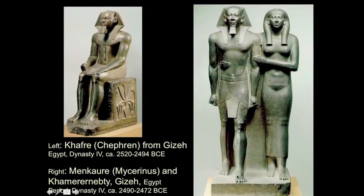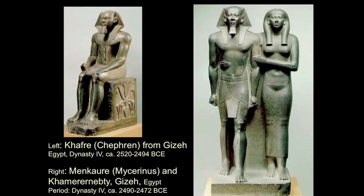Here we see statues of Old Kingdom pharaohs Khafre and Menkaure — also known as Khephren and Mycerinus. This will make you nuts: pharaohs are frequently known by two names. There's the Greek name, which was conventionally used through most of the 20th century, and the Egyptian name, which people are increasingly using because that's the real name. So Khafre is also Khephren, Menkaure is also Mycerinus. Either one will be fine for the purposes of this course.